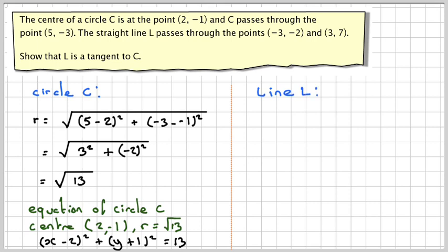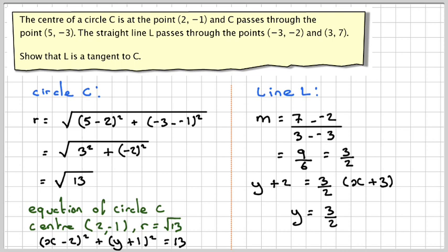For the line, the gradient will be (7 - (-2))/(3 - (-3)), which gives you 9/6, which we'll count down to 3/2. The equation of the line, using y - y₁ = m(x - x₁), will be y + 2 = (3/2)(x + 3). That gives me the line y = (3/2)x + 5/2.